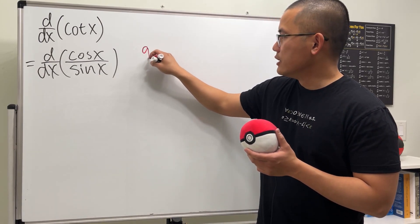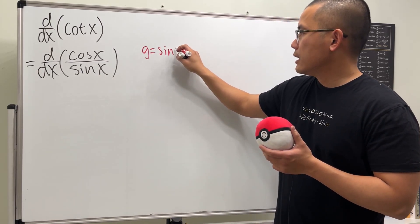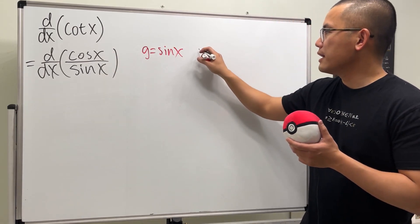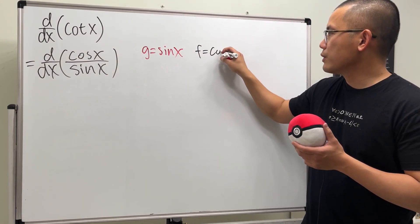The bottom function is sinx. And then the top function is cosx. So I'll denote that by f. So we have cosx.